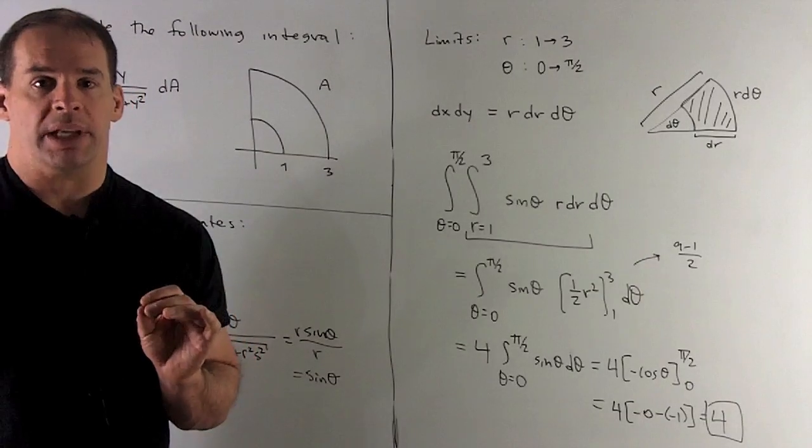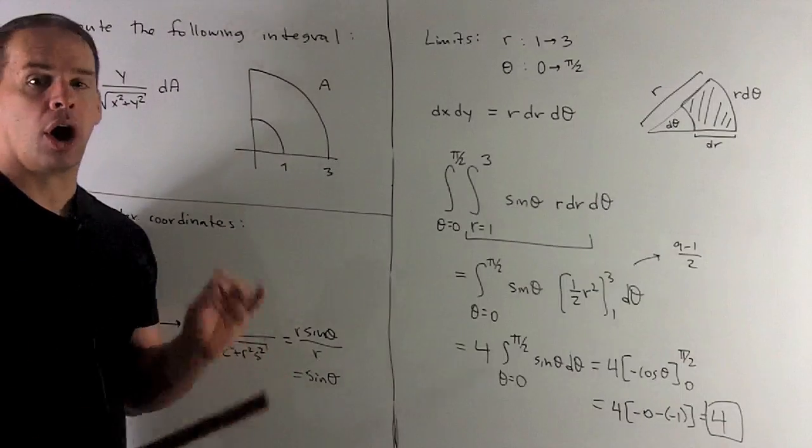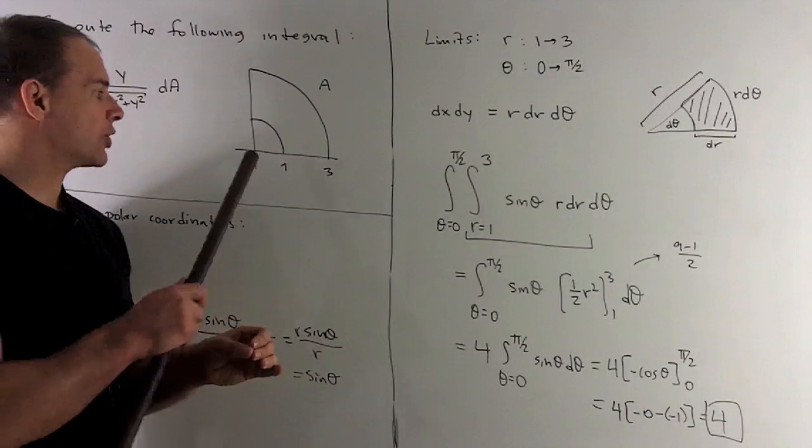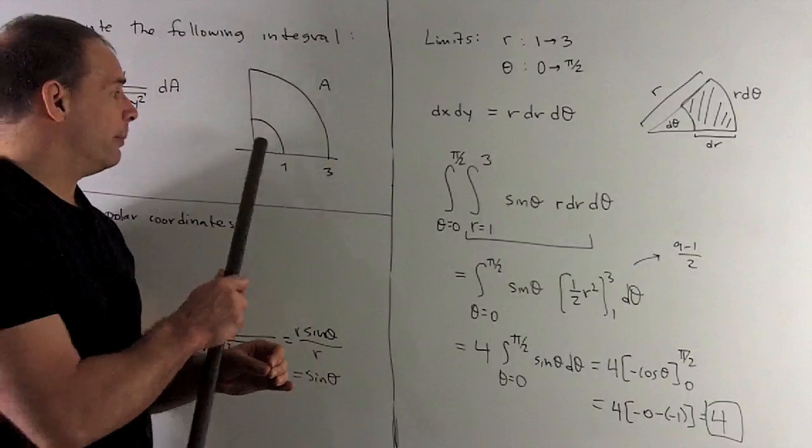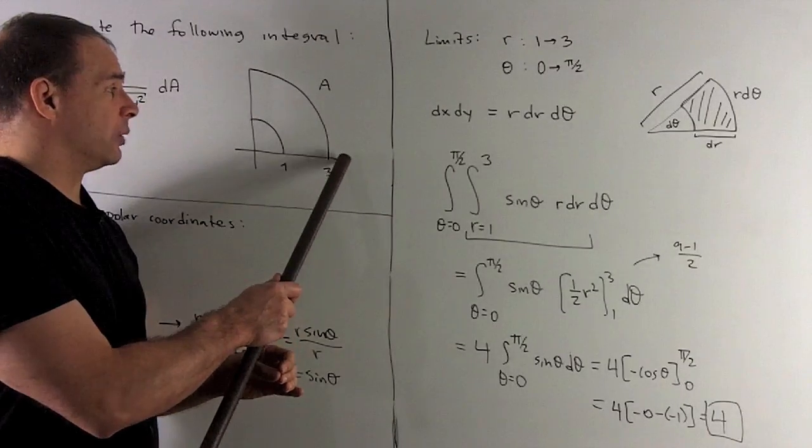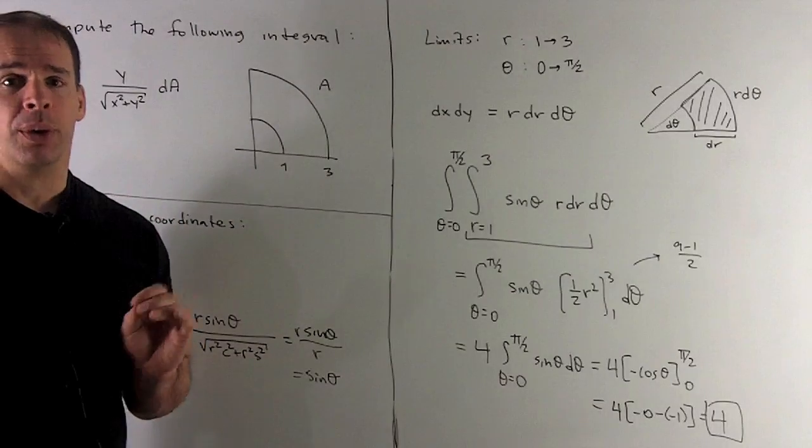Next, let's get the limits. I look at my region A, what do we have? I want to describe this in terms of r and theta. So, r's going to go from 1 to 3, then theta's going to go from positive x-axis, that's theta equals 0, to the positive y-axis, that's theta equal to pi halves.